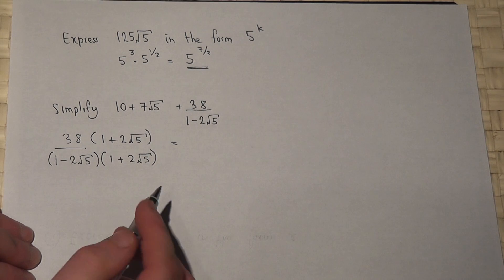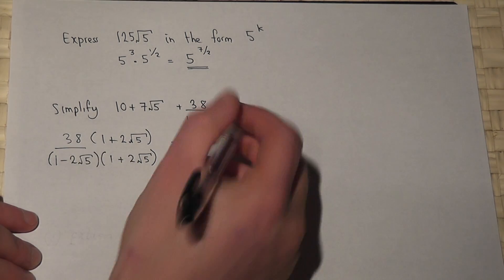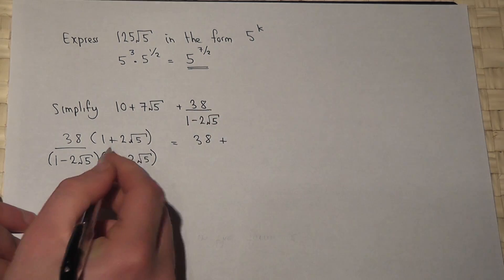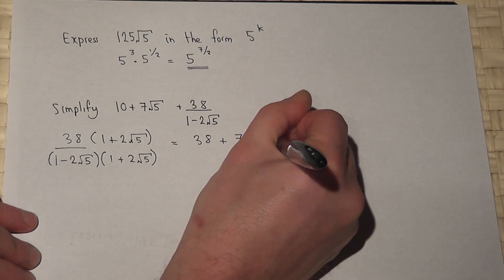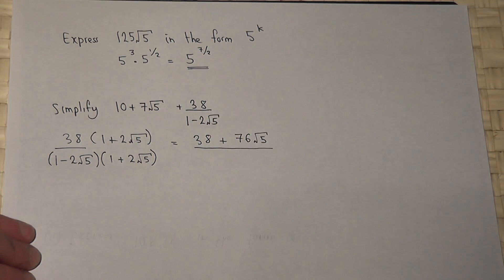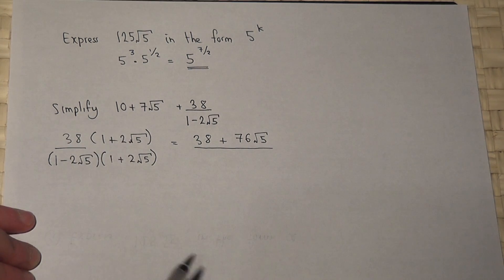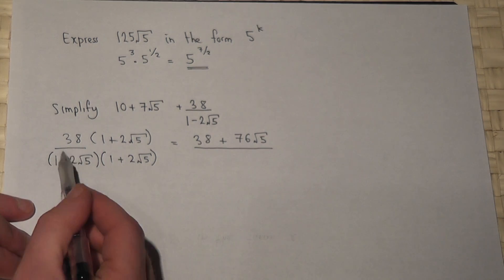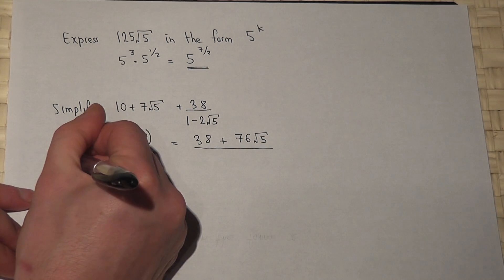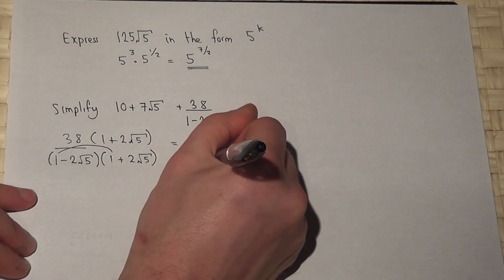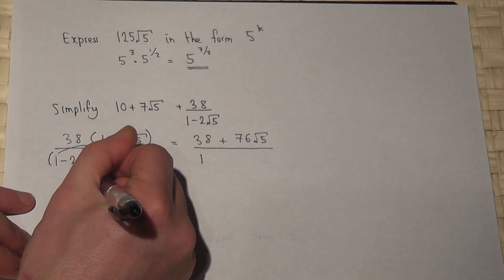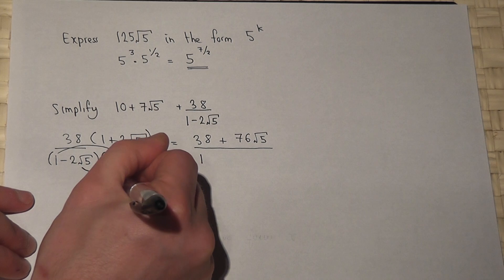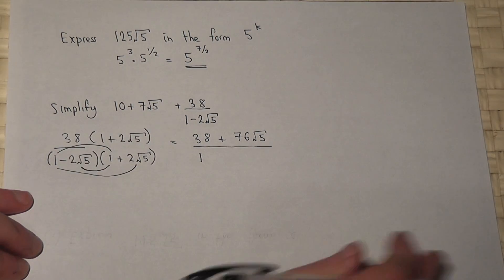If I times out the top: 38 times 1 is just 38, plus 2 times 38 is 76 root 5. For the bottom of the fraction, we expand using a smiley face or FOIL — I tend to use the smiley face. So 1 times 1 is 1. The clever fact here is that minus 2 root 5 times 1 and plus 2 root 5 times 1 cancel out.